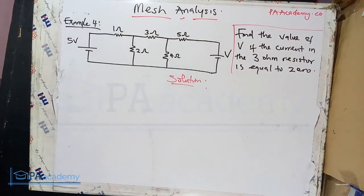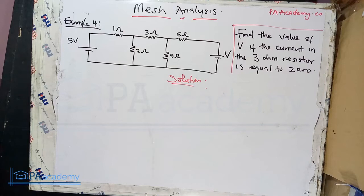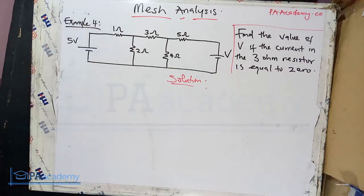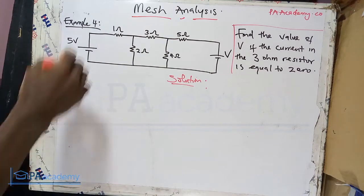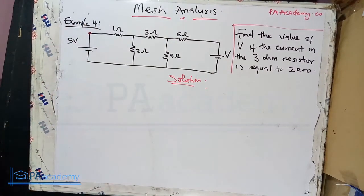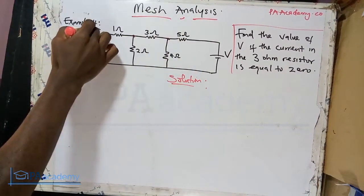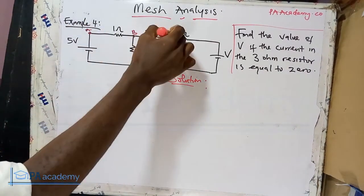We are still going to use mesh analysis, applying Kirchhoff's Voltage Law, along with all the principles discussed in the introduction to mesh analysis. The first thing is to identify the nodes. If you want to know more about the difference between nodes, branches, loops, and elements, I've done a video about it — check the description for the link. Let's label the nodes a, b, c.